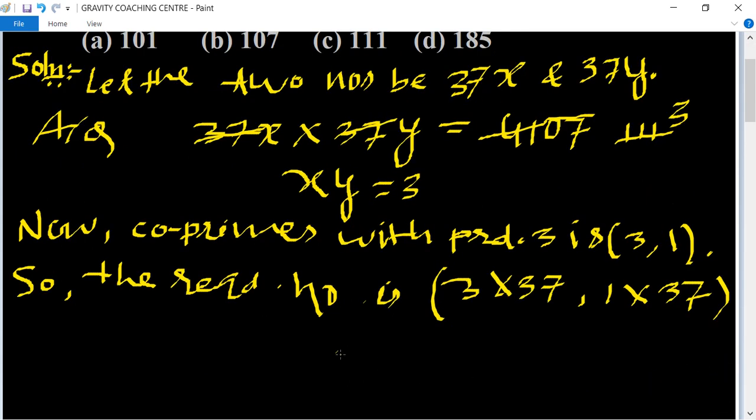That is, 3 into 37 equals 111, and 1 into 37 equals 37.